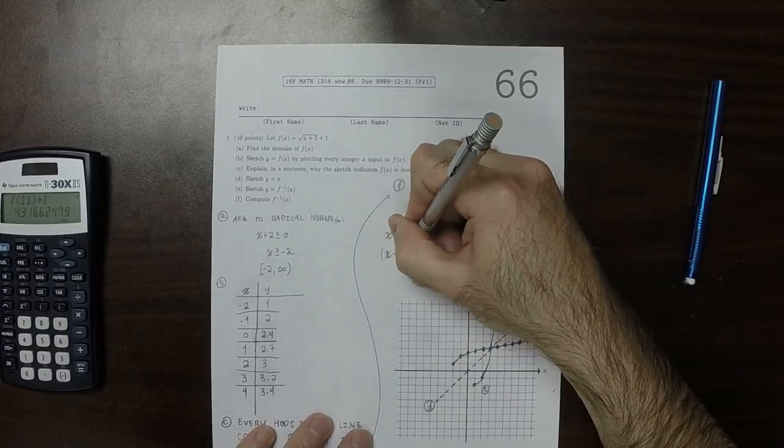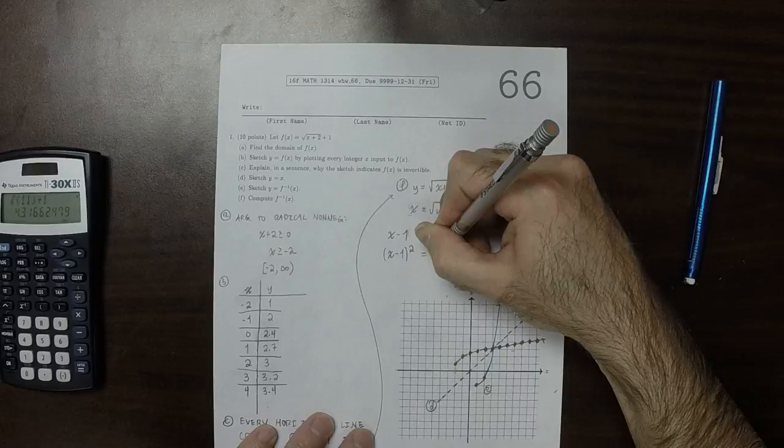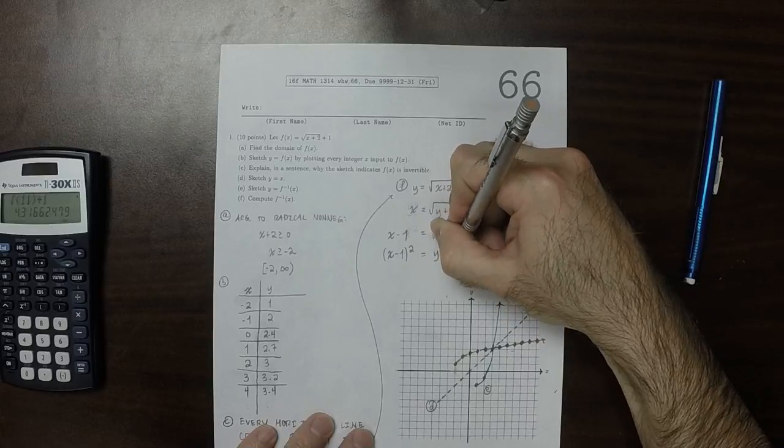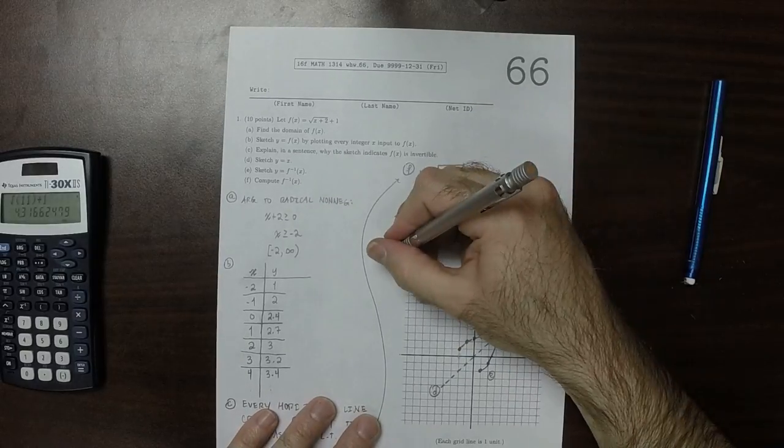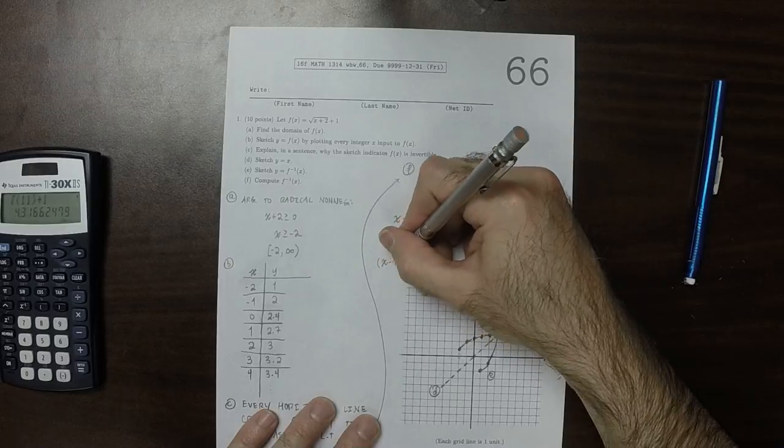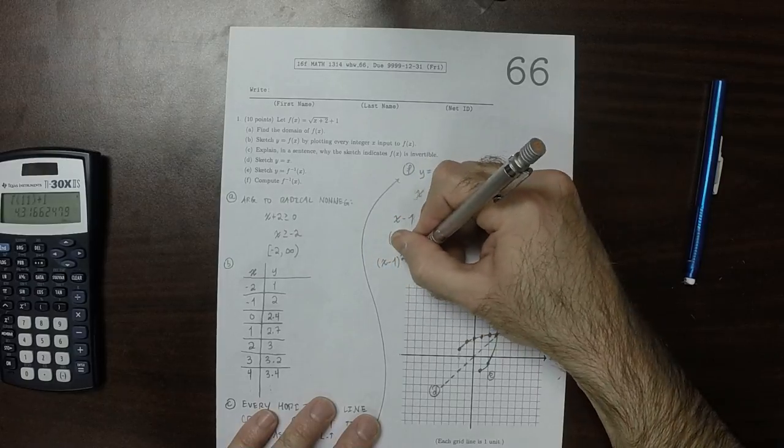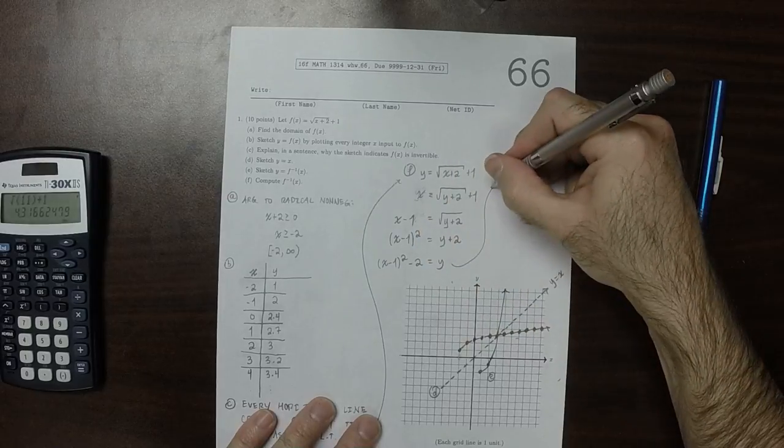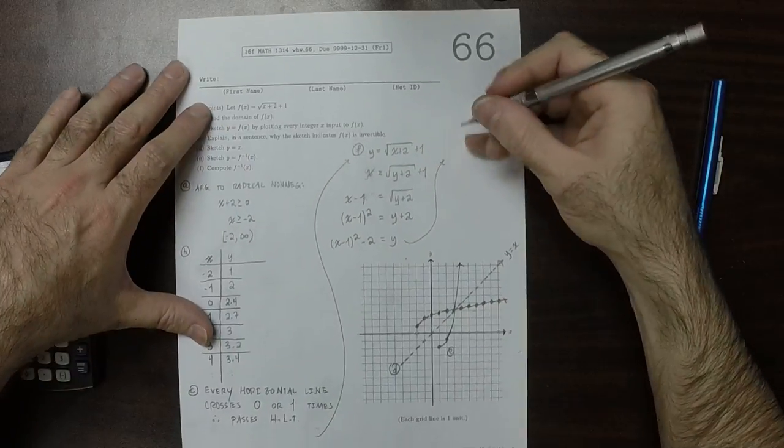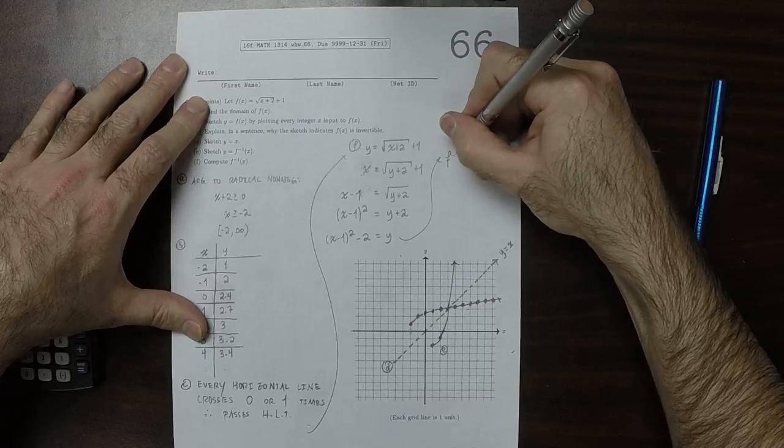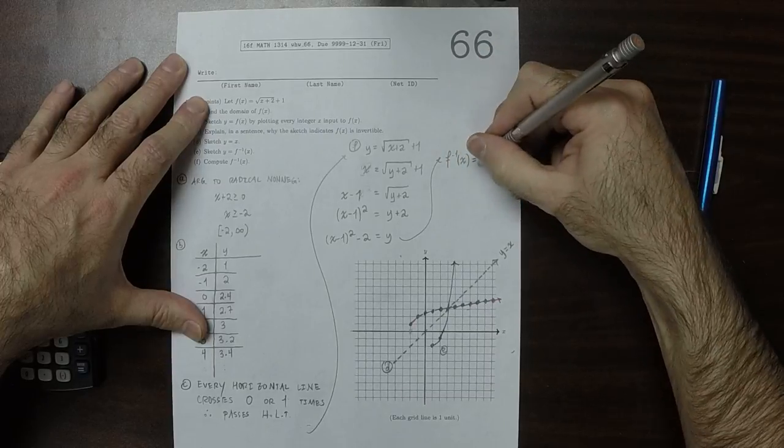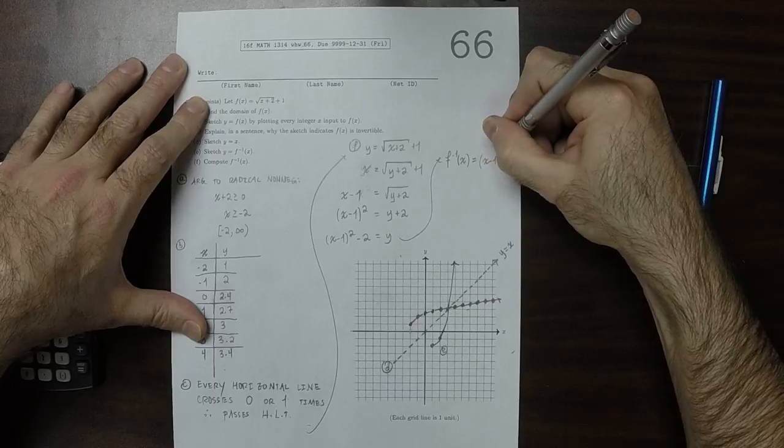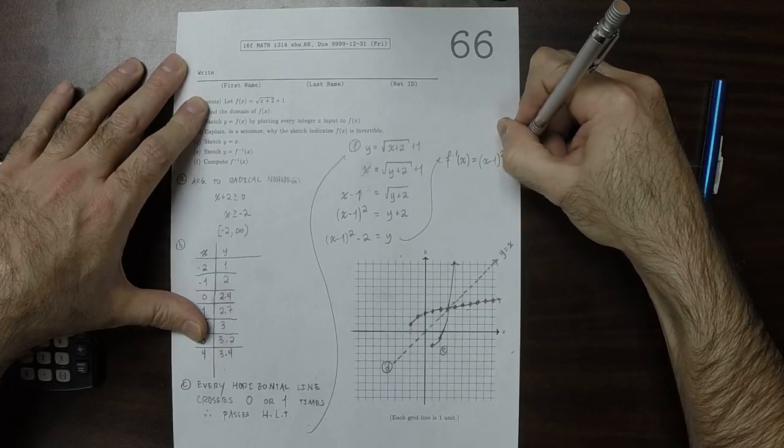So X minus 1 squared is Y plus 2. So X minus 1 squared minus 2 is Y. And therefore, the inverse function is X minus 1 squared minus 2.